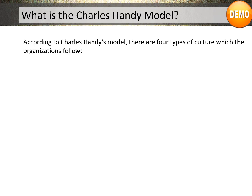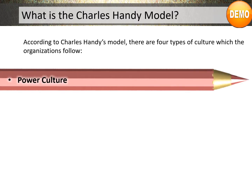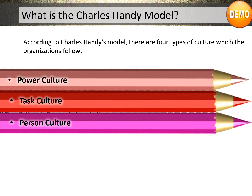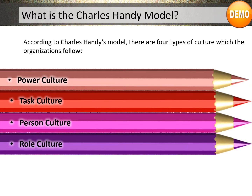According to Charles Handy's model, there are four types of culture which organizations follow: Power Culture, Task Culture, Person Culture, and Role Culture. Let's look at each one of them in detail.